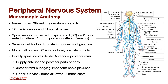For the peripheral nervous system, this is the macroscopic anatomy. We have your nerve trunks, which are glistening grayish-white cords. We have 12 cranial nerves and 31 spinal nerves. The spinal nerves connect to the spinal cord via two roots: the anterior, or efferent or motor, and the posterior, or afferent or sensory. Your sensory cell bodies are in the posterior or dorsal root ganglion, and you have motor cell bodies in your spinal cord anterior horn and your brainstem nuclei.